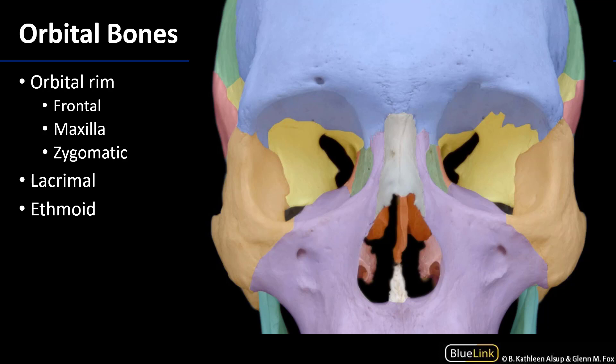The orbital rim is a circle which goes about the anterior margin of the orbit. It's formed of three bones: the frontal, the zygomatic, and the maxilla.